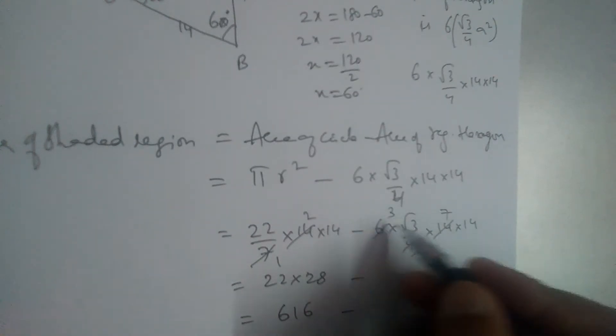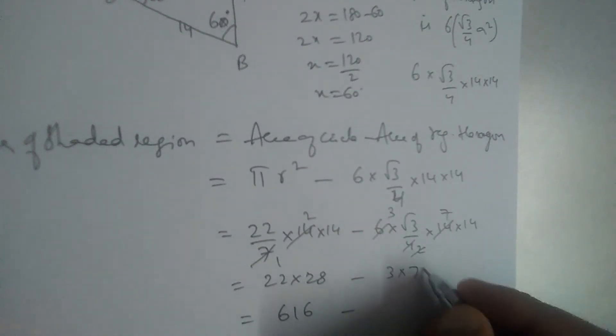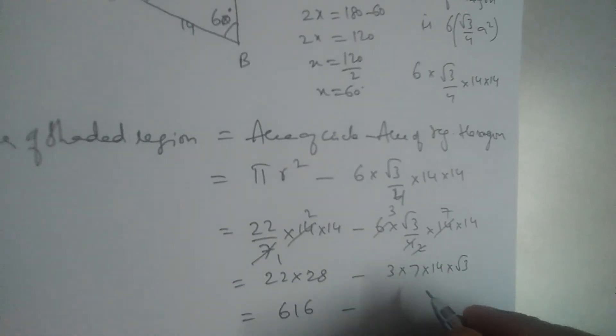Three into 7 into 14 into root 3. This will give us 3 into 7 into 14. So this will be approximately 509.2.